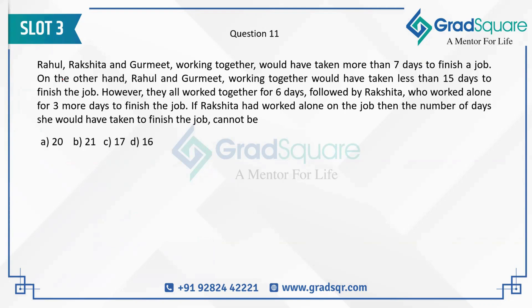Rahul, Rakshata, and Gurmeet — these are the three individuals. We are taking their efficiencies or number of units as A, B, and C respectively. We are going to represent Rahul as A, Rakshata as B, and Gurmeet as C. Working together, they would have taken more than seven days to finish the job.